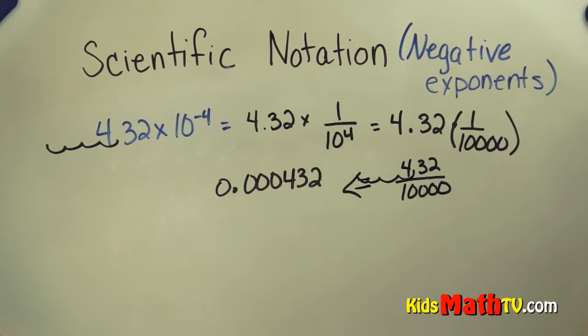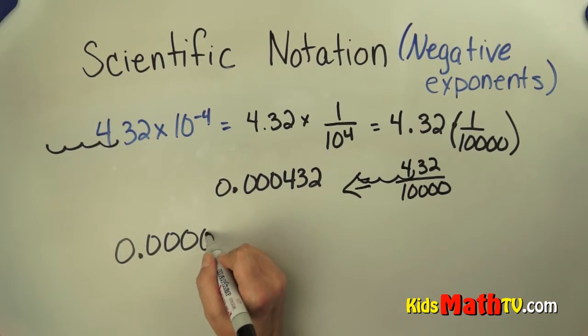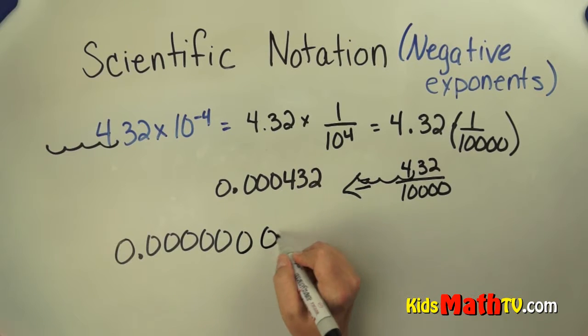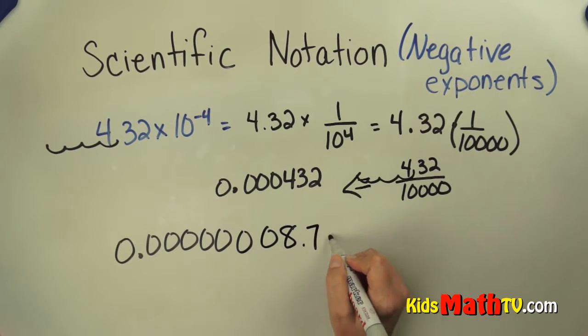So let's just go the other way. What if I have a really small number such as 0.00000087? So now we have this really, really tiny number. We can rewrite that in scientific notation.